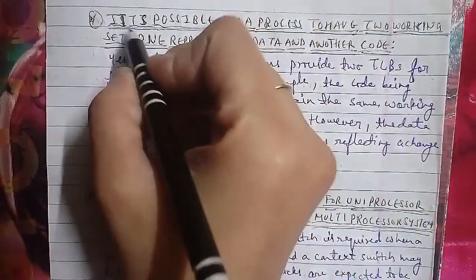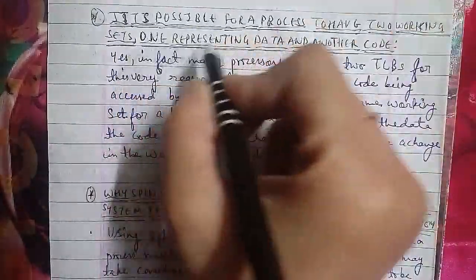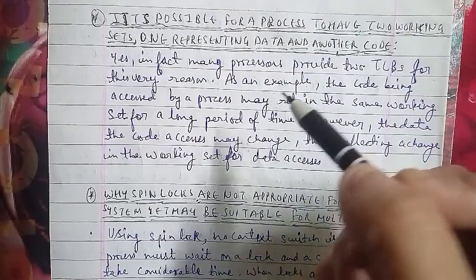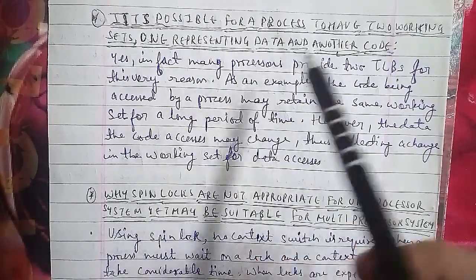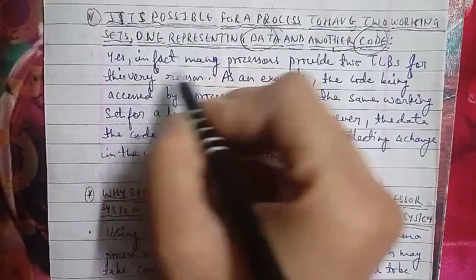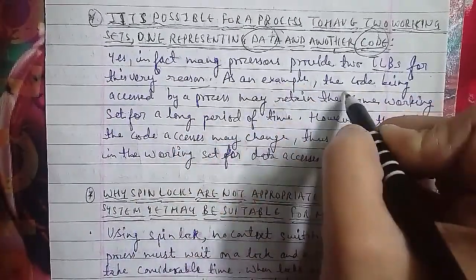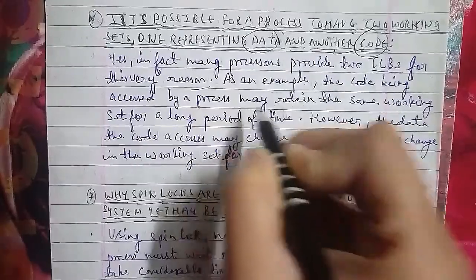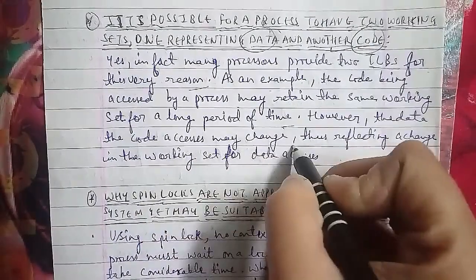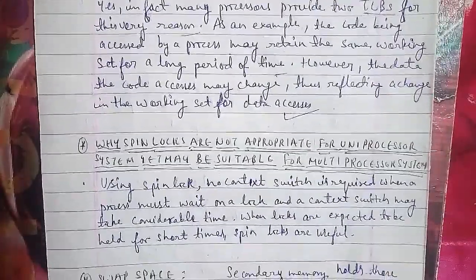It is possible for a process to have two working sets — one representing data and another representing code. In fact, many processors provide two TLBs for this very reason. The code being accessed by a process may retain the same working set for a long period of time, however the data access may change, reflecting a change in the working set for data access.